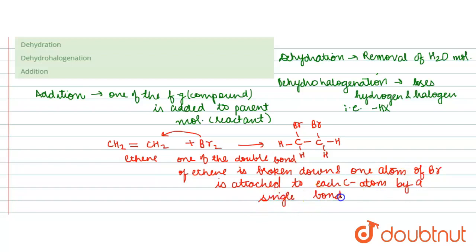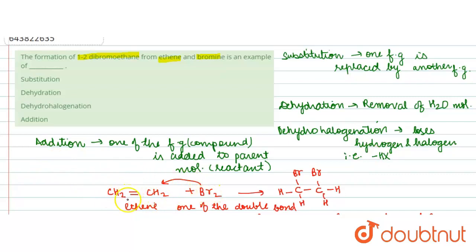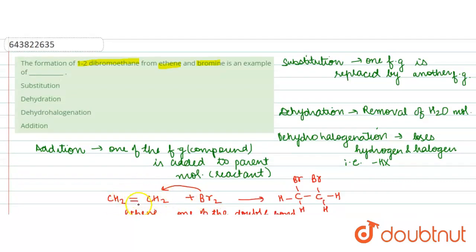In this reaction, bromine is adding up to the reactant molecule to give 1,2-dibromoethane. Thus this is an addition reaction. It is not a substitution reaction because no functional group is exchanged. It is not a dehydration reaction because no water molecule is removed. It is not dehydrohalogenation because there is no halogen atom in the parent molecule. Therefore, option four — addition reaction — is the correct answer.